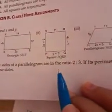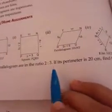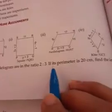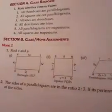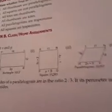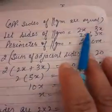Now question number two. The statement is: the sides of the parallelogram are in the ratio 2:3. If its perimeter is 20 cm, find the length of the sides. The sides of the parallelogram are given in ratio.